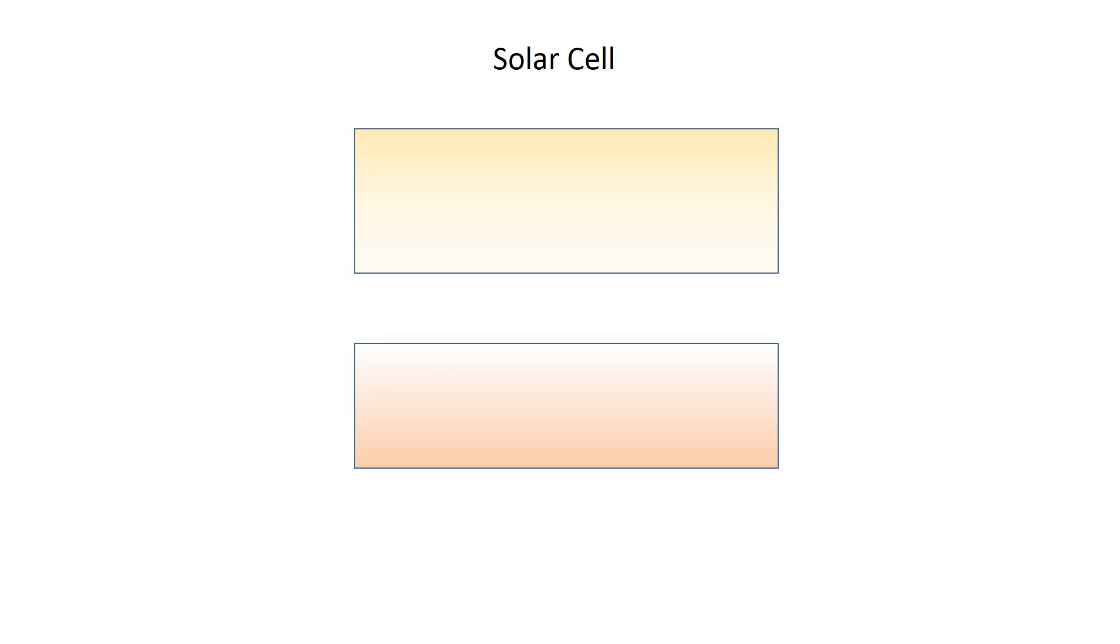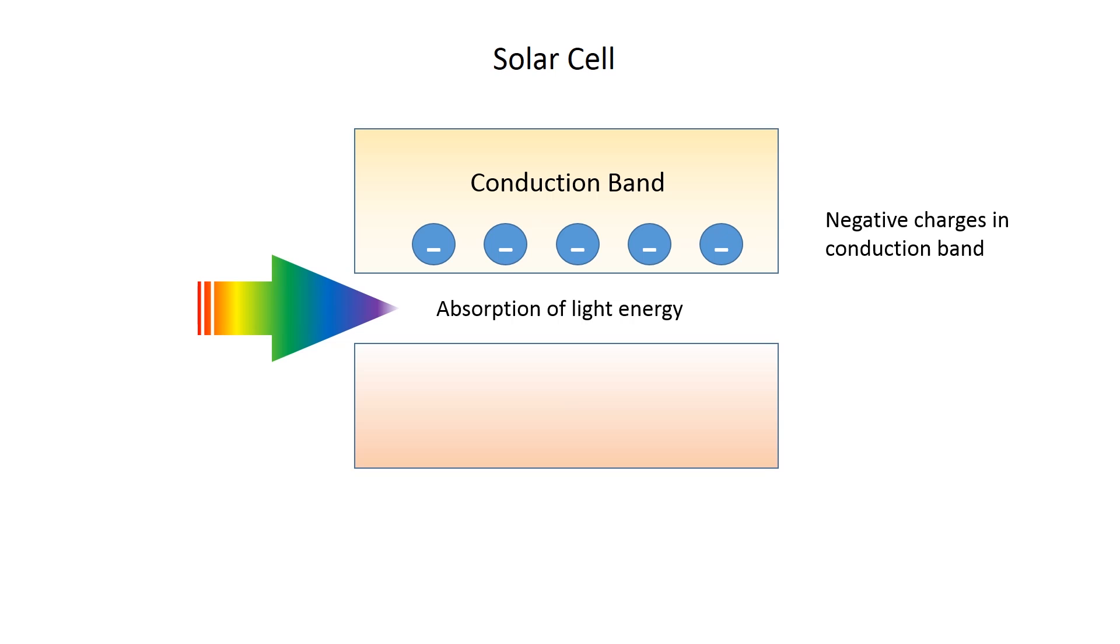First I'll give a quick introduction about how a solar cell works. A solar cell uses a semiconductor to generate electricity. When light gets absorbed by a semiconductor crystal, negatively charged electrons surrounding the atoms in the crystal lattice absorb the energy of photons and are promoted to conductive electronic states in the crystal, known as the conduction band.